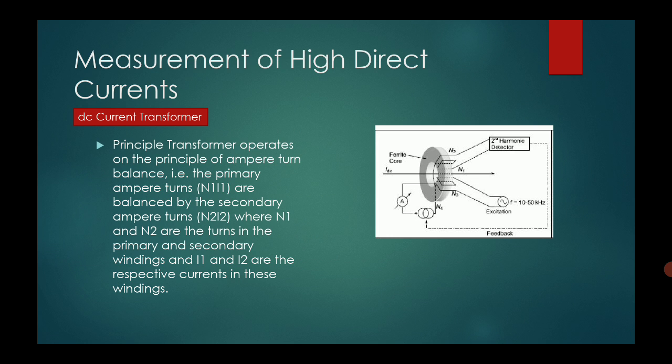We can also measure high direct current using DC current transformers. The schematic diagram is shown here. The transformer operates on the principle of ampere-turn balance: the primary ampere-turns N1·I1 are balanced by the secondary ampere-turns N2·I2, where N1 and N2 are the turns in the primary and secondary windings, and I1 and I2 are the respective currents. When high direct current passes through the ferrite core, it produces a circular magnetic field crossing both N1 and N2 turns, and from the balance value we can measure the high direct current.